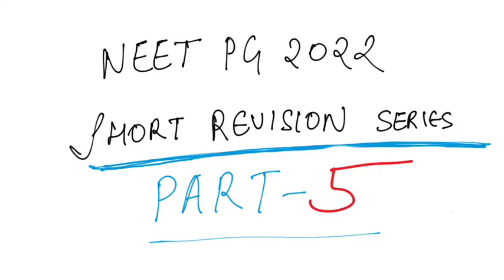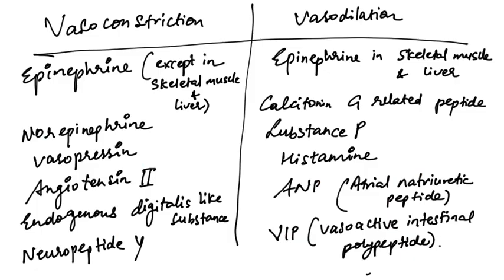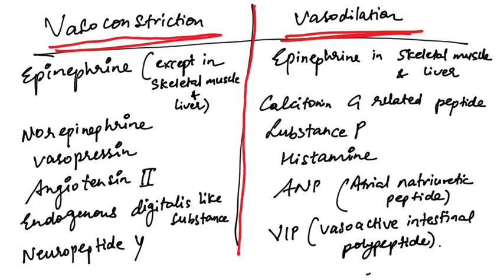Hello everyone and welcome to short revision series for NEET PG 2022 part 5. The agents which cause vasoconstriction and vasodilation in our body are very important and these are frequently asked.